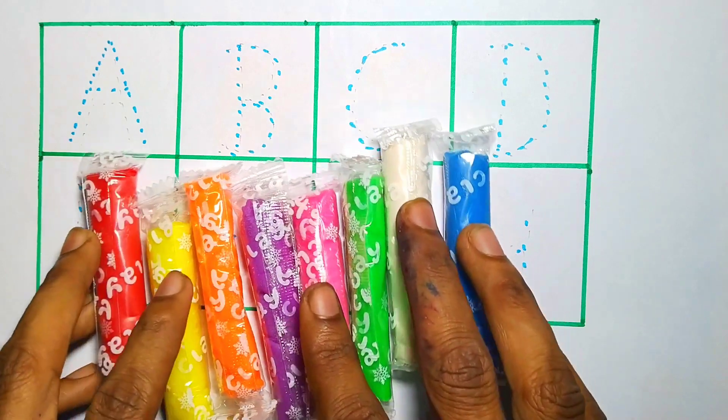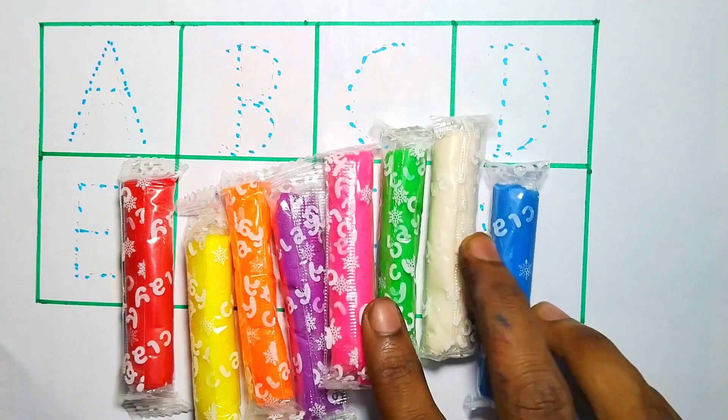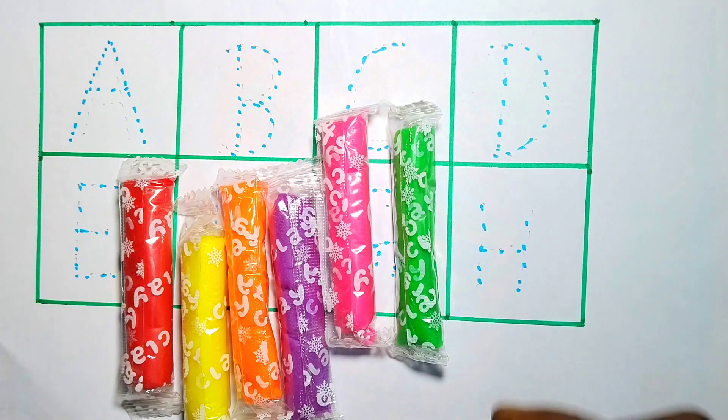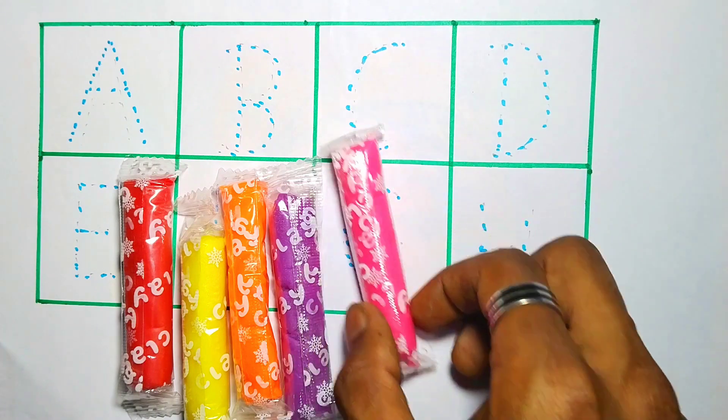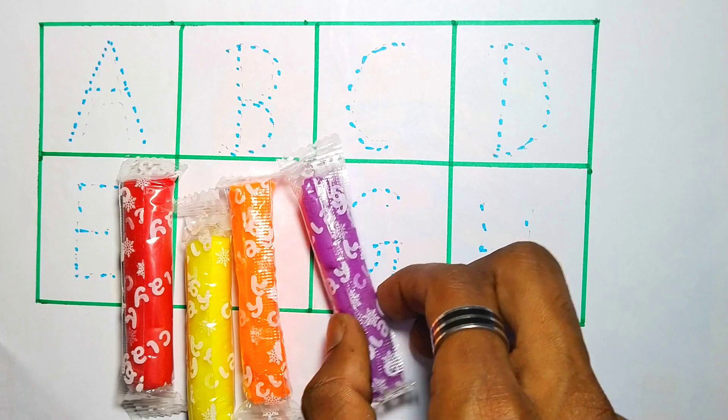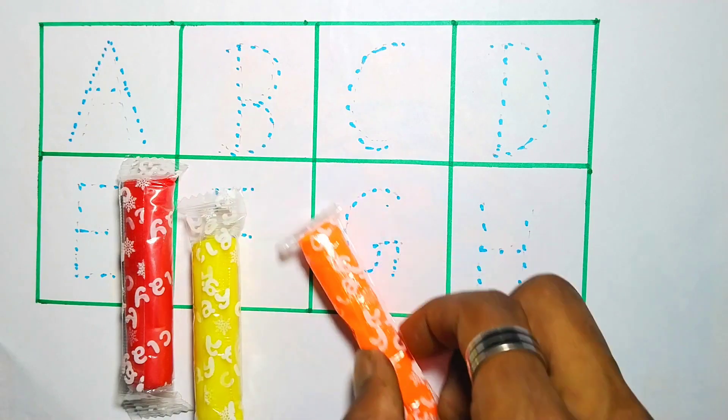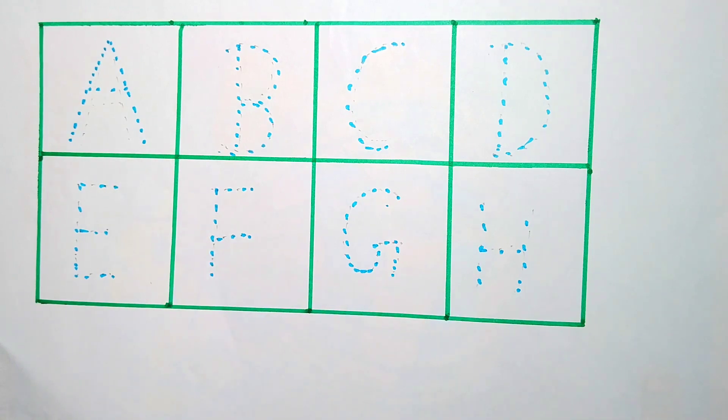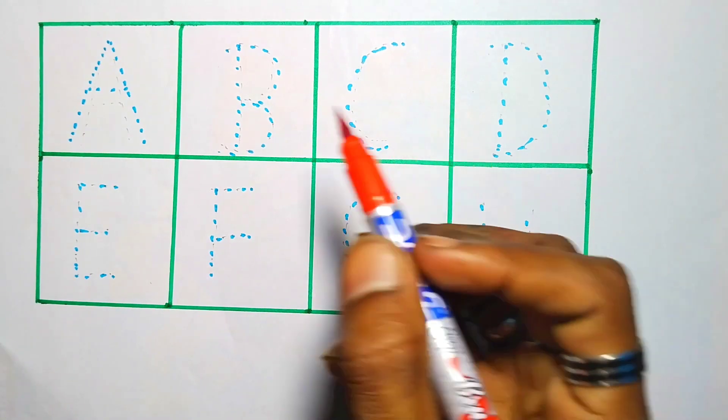Now we are writing alphabets. Blue color, white color, green color, pink color, violet color, orange color, yellow color, and red color.